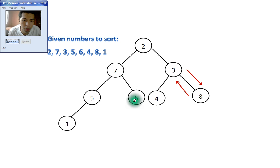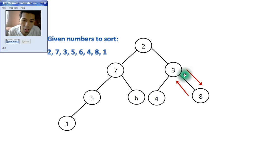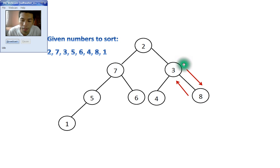First we evaluate the left side of the tree. 1, 5 and 6 are less than 7, so we shift to the right side. 4 and 8 are greater than 3. Since 8 is greater than 4, 8 will be at the top of 4 and 3. So 3 will be shifted down and 8 will be shifted to the position of 3, as shown by the red arrow.